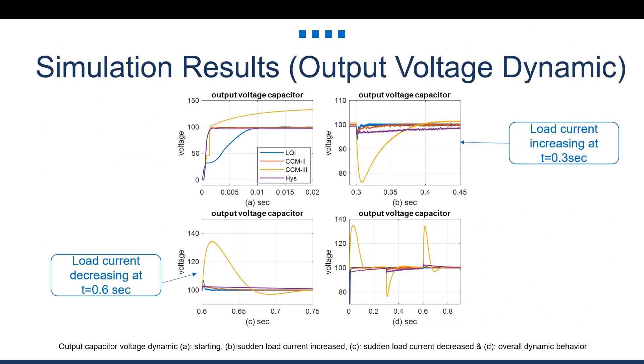The dynamic response of the output voltage is shown here in this slide. Blue plots represent the case of the LQI scenario. Red and yellow plots represent the cases of using current control mode scenarios with different gain values as shown in the slide before. And the purple color represents the case of the hysteresis current controller. The load current is changing every 0.3 seconds as shown in D. A is a zoomed view of the dynamics from the time when the system was switched on. 0.3 seconds is when the load current increased as shown in B. And at 0.6 seconds, the load current is decreased as shown in C.